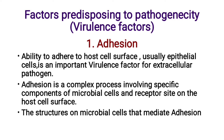What are the factors predisposing to pathogenicity? What are the virulence factors? The first one is Adhesion. Adhesion is the ability to adhere to host cell surface, usually epithelial cells, and is an important virulence factor for extracellular pathogens. Adhesion is a complex process involving specific components of microbial cells and receptor sites on the host cell surface.